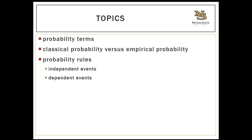Then I'll move on to the probability rules for empirical probability, and there are two different types: one set of rules for independent events that don't influence each other, and another set for dependent events that do. I want you to attempt all the gold problems in this lecture without looking at the answers — the answers will be verbalized but not presented on the slides. So be prepared to take notes and try to attempt them before I give you the answer.